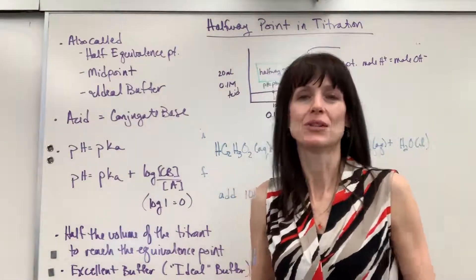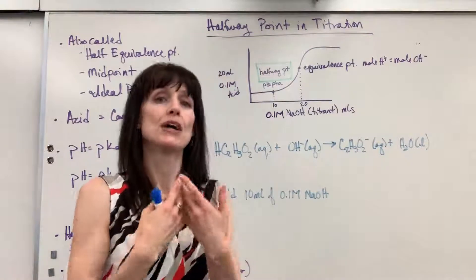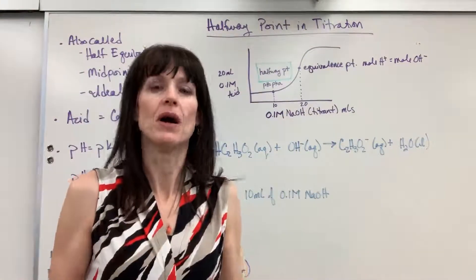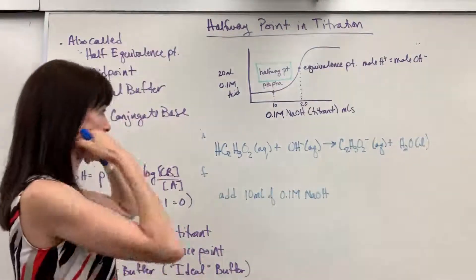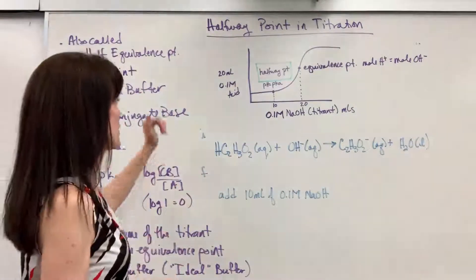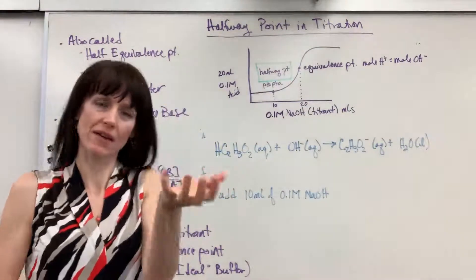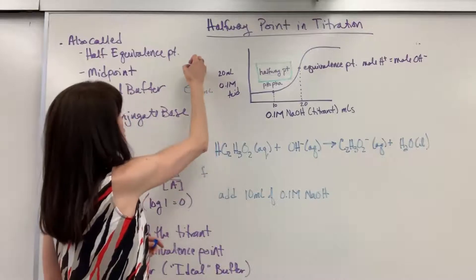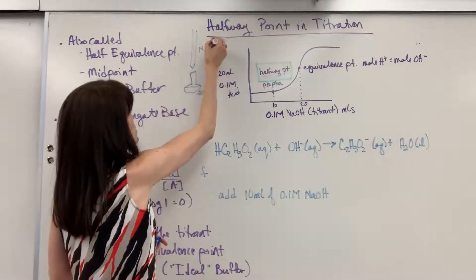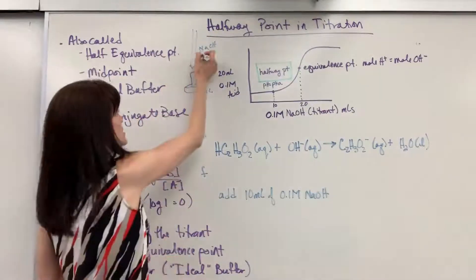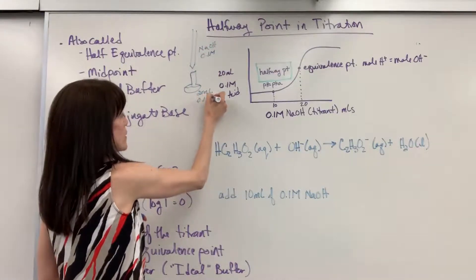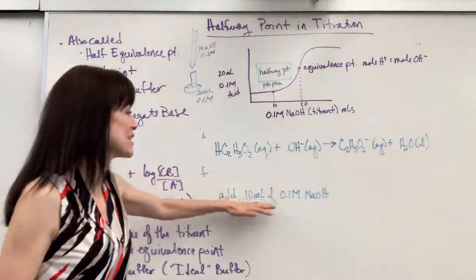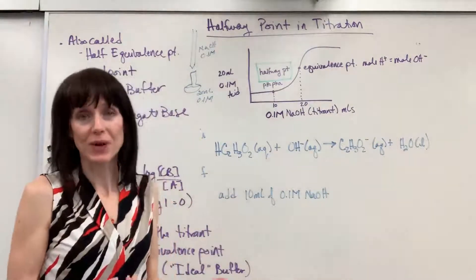Now I want to do a problem so you can see, using initial and final moles, how to identify the halfway point even without the graph. We have 20 mils of 0.1 molar acetic acid in the Erlenmeyer flask. The burette has 0.1 molar NaOH. In this problem, we add 10 mils of 0.1 molar sodium hydroxide, and I want to know what is the pH.